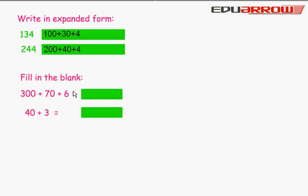Fill in the blank. Now, we will add these 3 digits. 300 plus 70 plus 6 - This is 376. 40 plus 3 - This is 43.